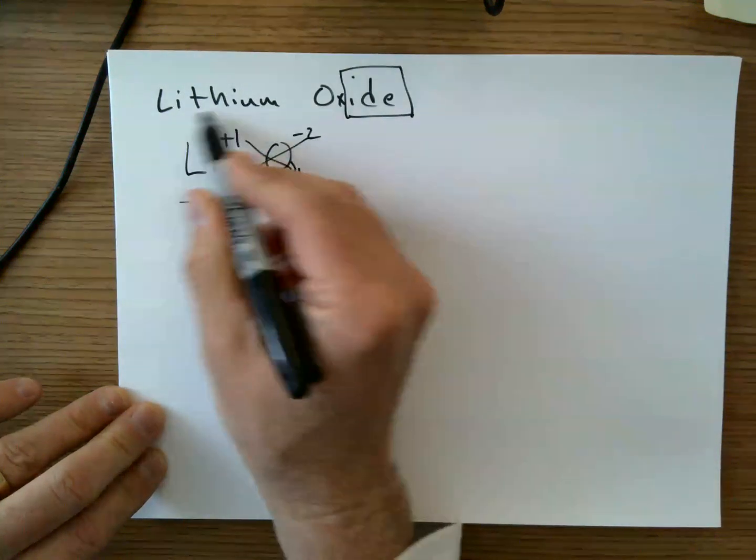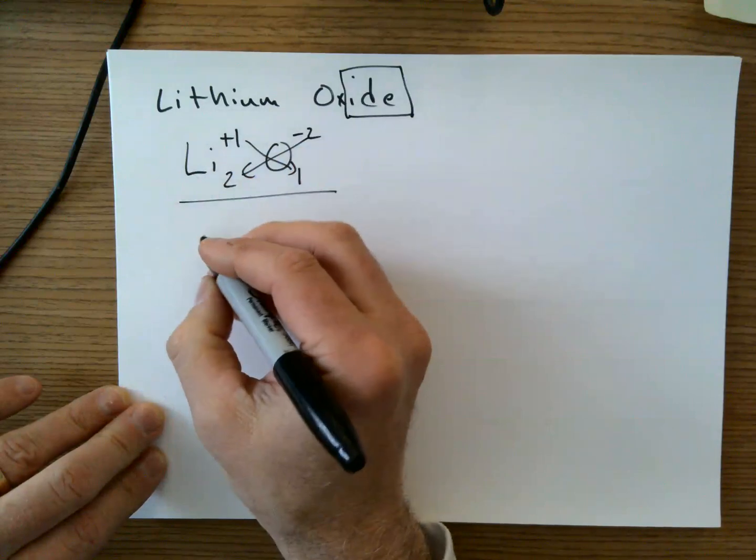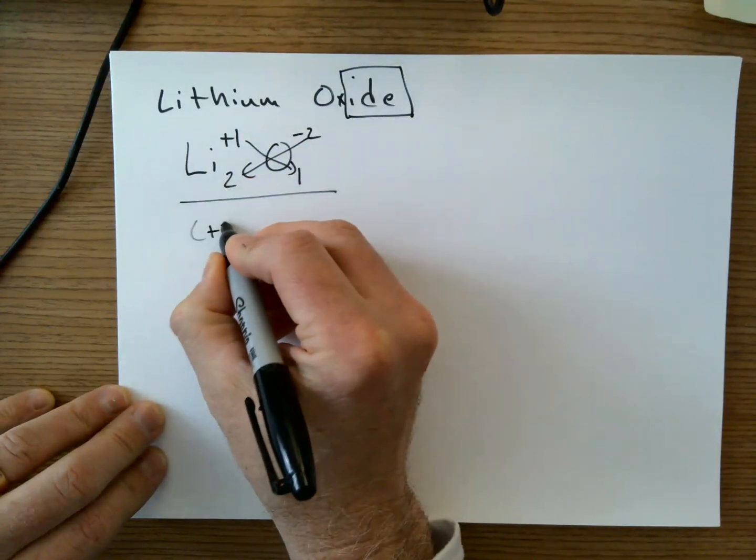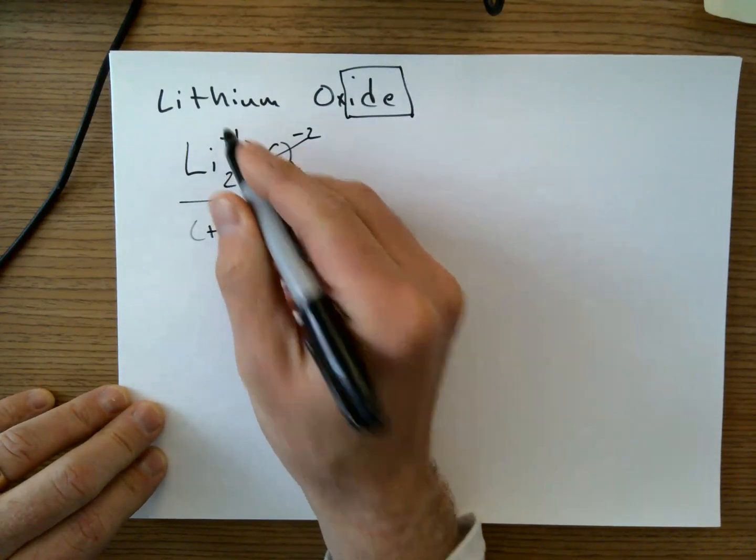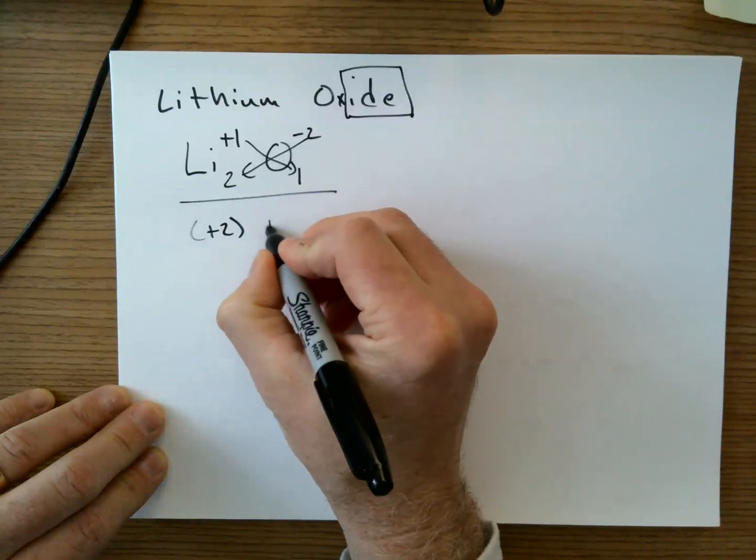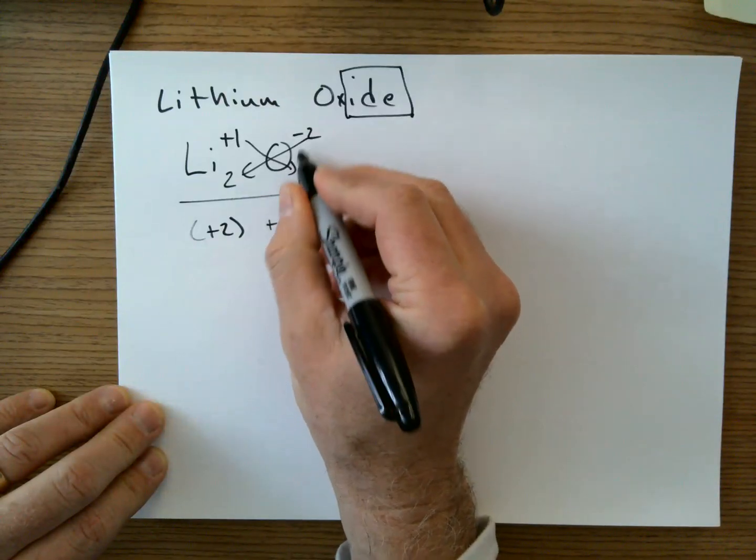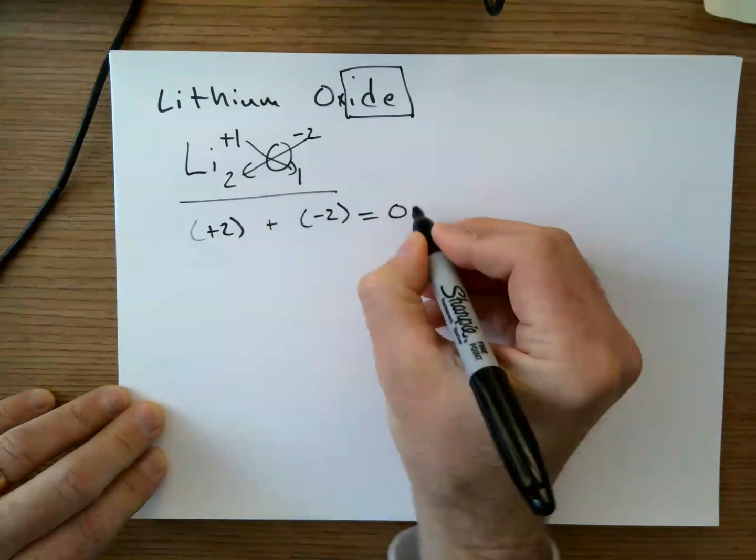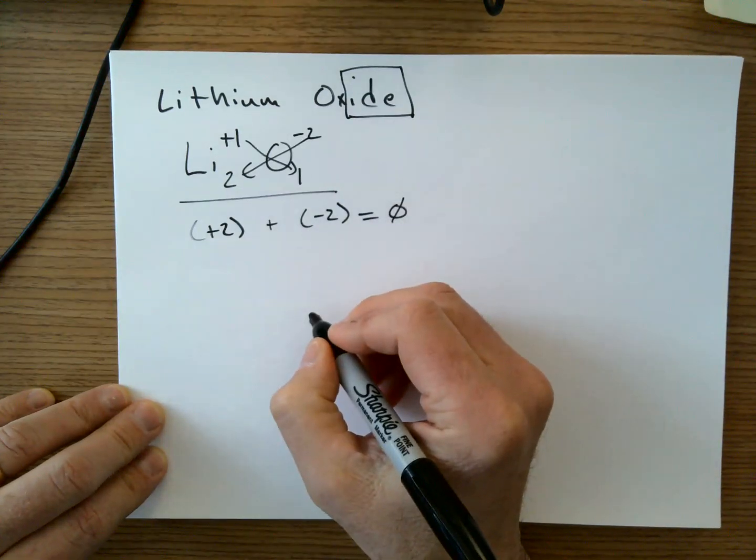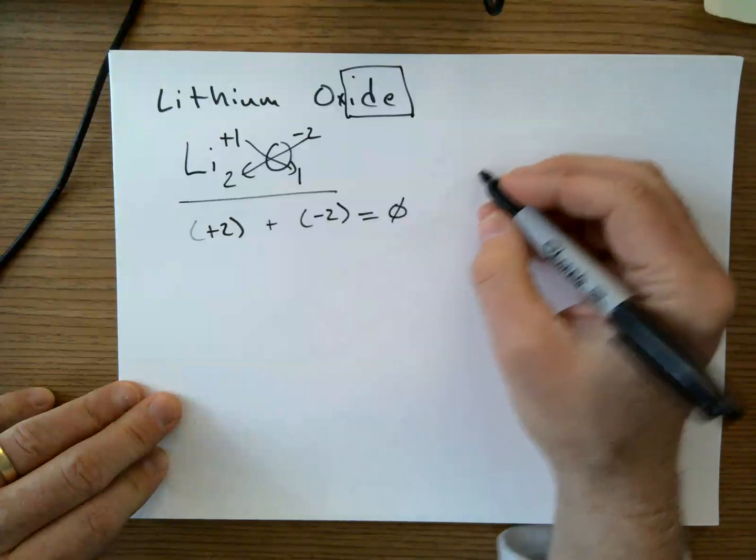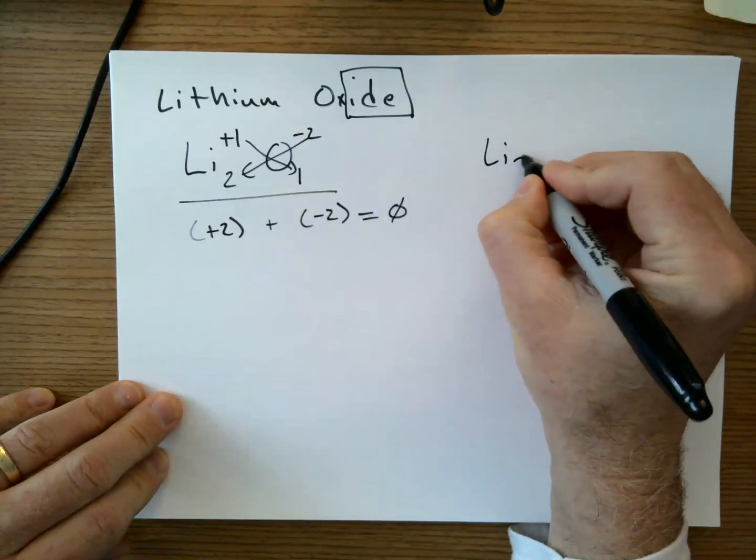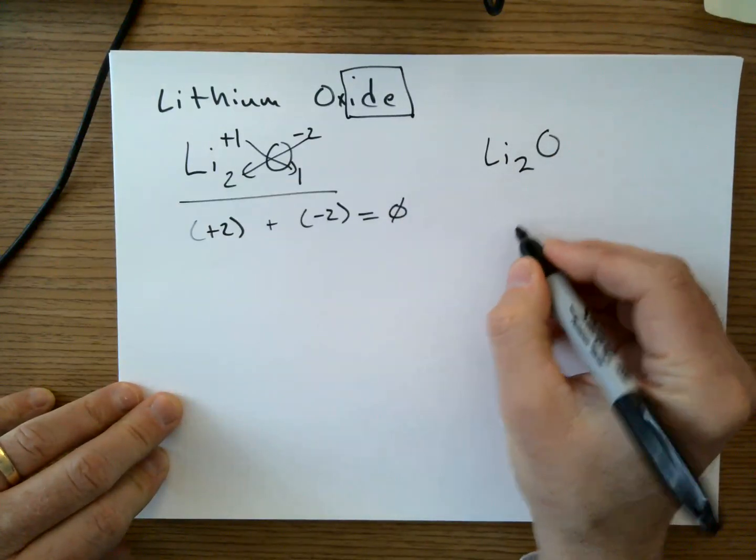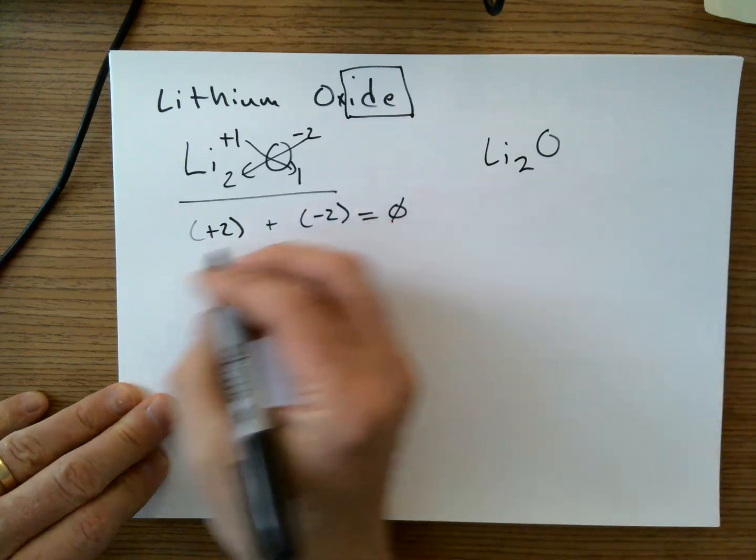Now, if you think about this, if I have two lithiums and each one of them have a positive one charge, that's going to be a total of a positive two, right? Two times positive one is positive two. And if I have one oxygen and it has a negative two charge, that's going to be negative two charge. All compounds have to have zero charges. So the final answer for this would be Li₂O₁. We don't write the one.